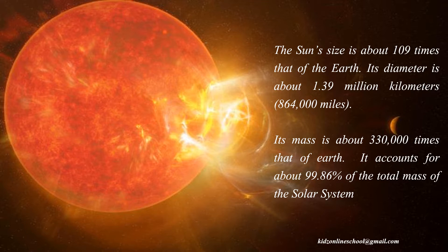The Sun's size is about 109 times that of the Earth. Its diameter is about 1.39 million kilometers. Its mass is about 330,000 times that of the Earth, and it accounts for about 99.86% of the total mass of the solar system.